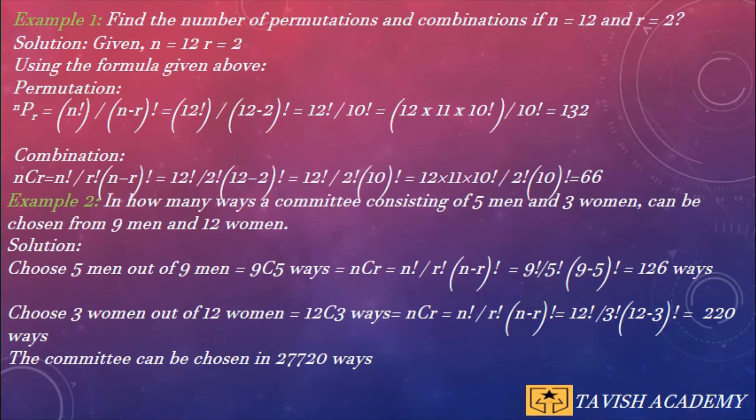Now we have to choose 3 women out of 12 women. So the formula of combination will be n! / (r! × (n-r)!).